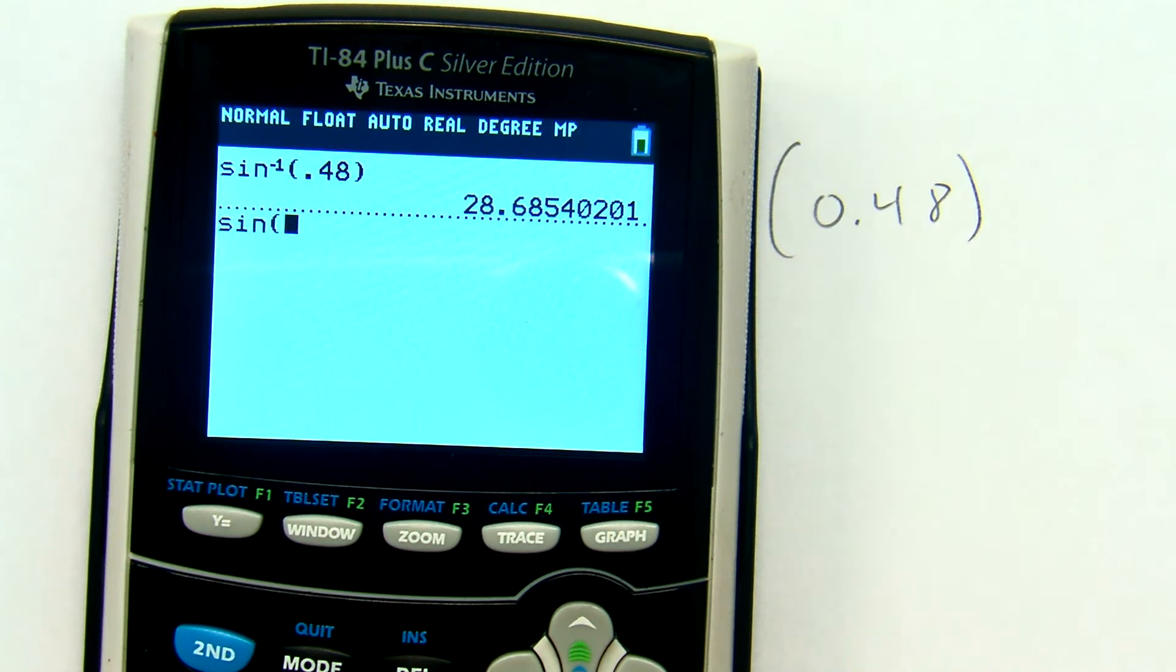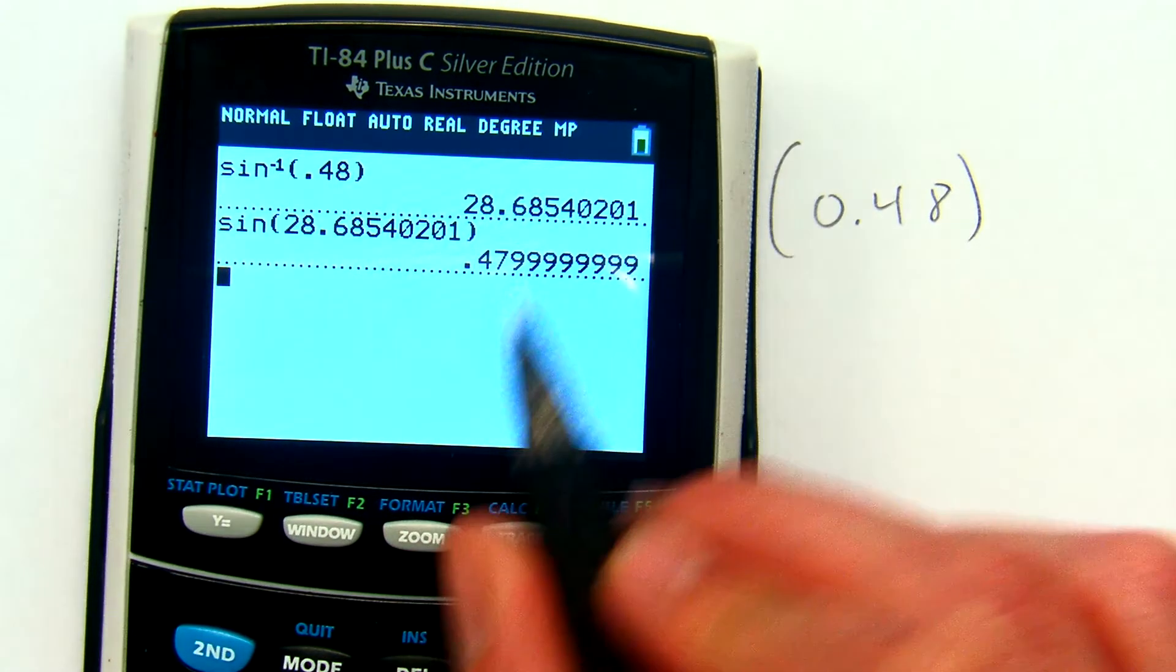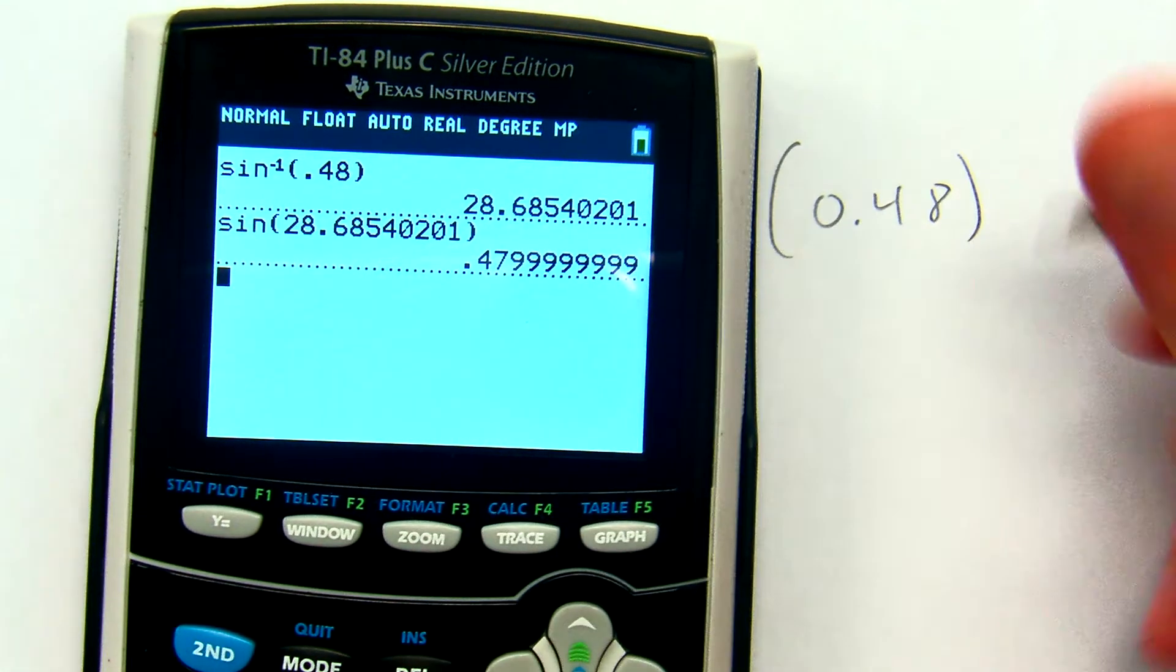You know what? In fact, let's check. Sine of this number, is it in fact equal to 0.48? Yeah, that rounds to 0.48. So my answer in degrees is 28, let's round to the nearest tenth, 28.7 degrees.